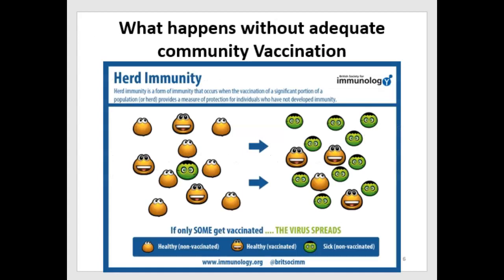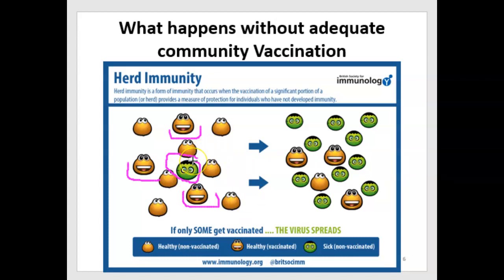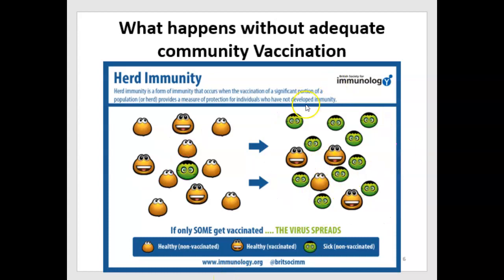This image shows what happens if only a small proportion of a community are vaccinated. The vaccinated individuals are shown with smiles in yellow — there are three of them. The other yellow individuals without smiles are healthy but unvaccinated. The green one got sick after being exposed to a pathogen. Because few individuals were vaccinated, this sick person — through coughing, sneezing, touching — spread the disease to almost all of the unvaccinated individuals. One lucky person didn't get vaccinated but also didn't come into contact with the pathogen.